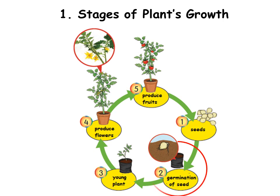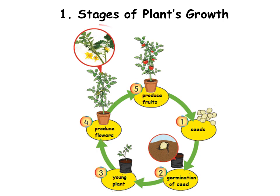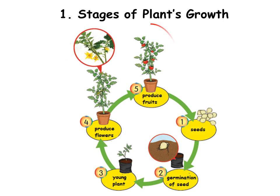After a while, it will enter the next stage which is young plant. When the young plant receives enough water, air, and sunlight, it will continue to grow and produce flowers. After that, it will continue to grow and produce fruits. The fruits will produce seeds, and then the cycle will continue to repeat itself.